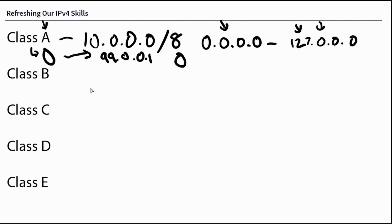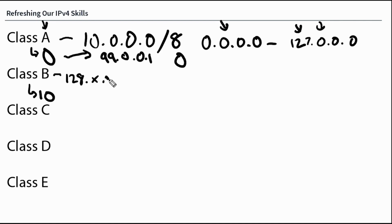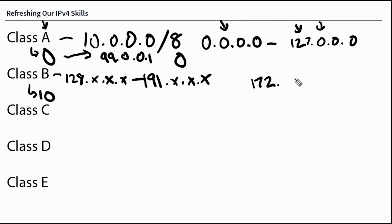This is where the trend starts to emerge when we go to Class B. The Class B higher-order bit is going to be one, then zero — the first two bits are always one then zero. The result is that Class B is a range of 128.x.x.x to 191.x.x.x. When you think of Class B addresses, you're probably thinking of that 172.x.0.0 slash 12 subnet, which is 172.16 through 172.31.255.255.